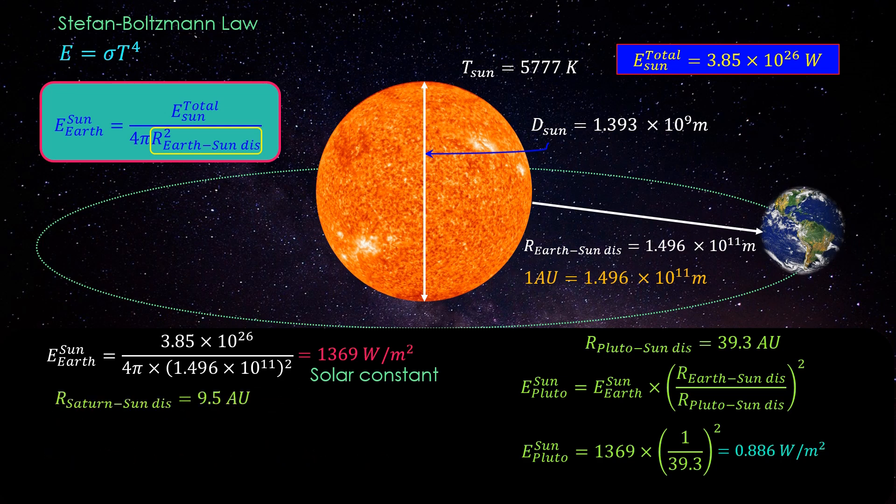Similarly for Saturn, the distance between sun and Saturn is 9.5 astronomical units. On substituting the values we get 15.17 watt per meter square solar constant at Saturn.